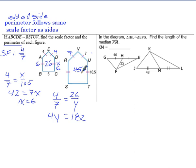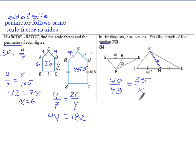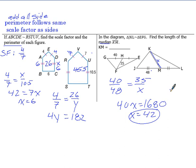In the next example, JKL is similar to EFG. Find the length of median KM — a median cuts a line in half. We set up the comparison: 40 is to 48 as 35 is to X. Cross multiplying gives 40X equals 1680. Dividing both sides by 40 gives X equals 42, so the median length is 42.